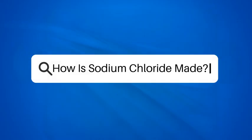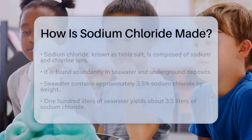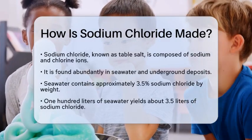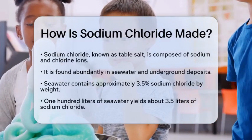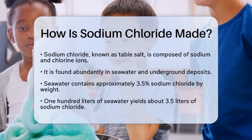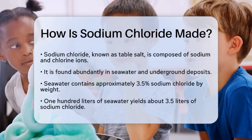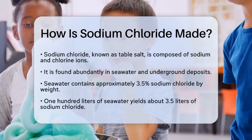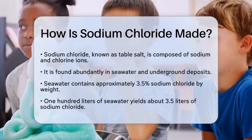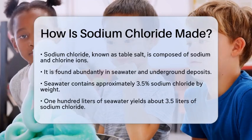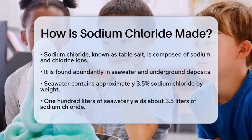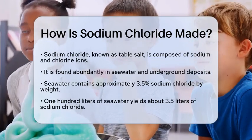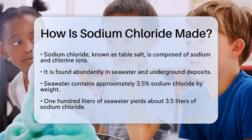How is sodium chloride made? Have you ever wondered how the salt on your table is created? Sodium chloride, commonly known as table salt, is a fascinating compound made from sodium and chlorine ions. Let's break down how this essential ingredient is produced both naturally and through industrial methods.